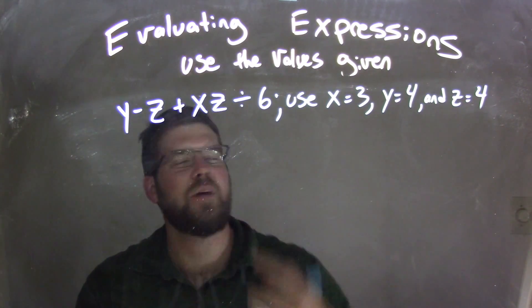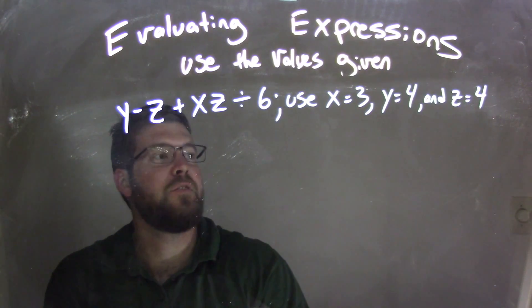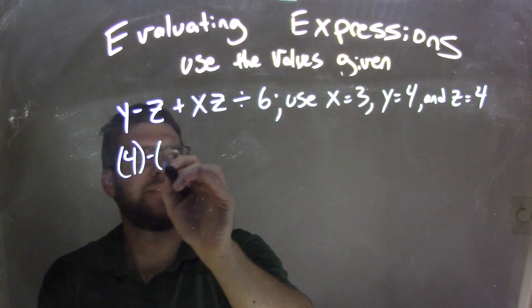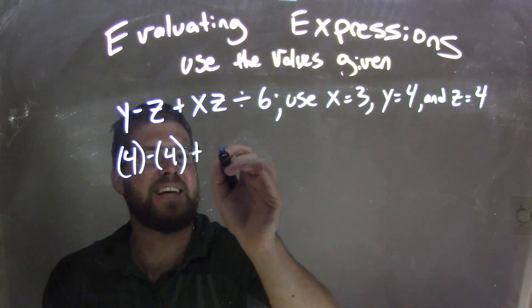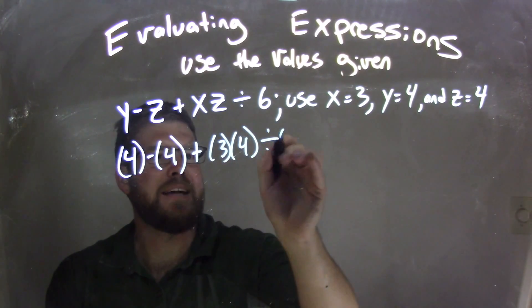So our first step, let's substitute everything in. So x is 3, y is 4, and z is 4. So y is 4, so 4 out here, minus z which is 4, plus x times z. Well, x is 3, y times z is 4, and we divide it by 6.